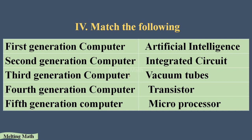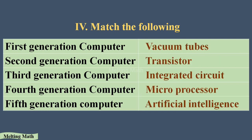In the third generation computer, the Integrated Circuit (IC) was used for processing and memory storage. In the fourth generation computer, microprocessors were used for storage and processing. In the fifth generation computer, which we use today, artificial intelligence is used for memory and programming. That completes the match the following section.